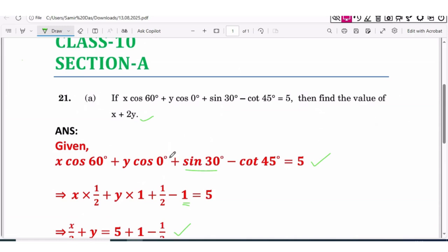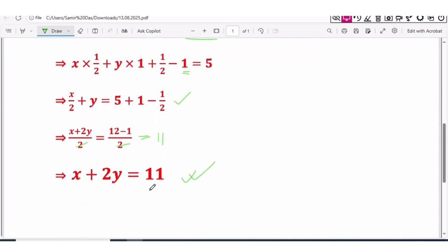12 - 1, that is equal to 11. So therefore x + 2y equals 11, and hence the value of x + 2y is 11. So 11 is the final answer. Thank you.